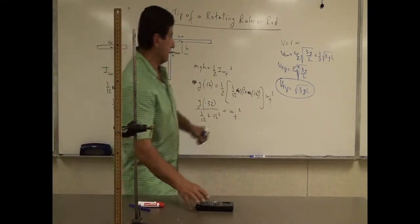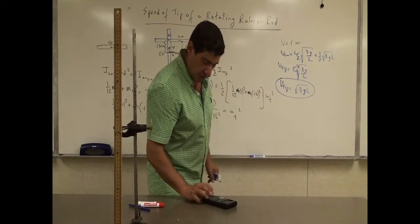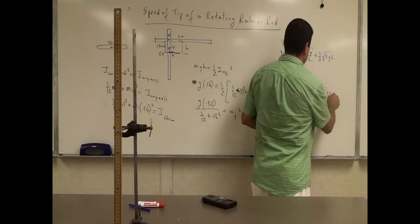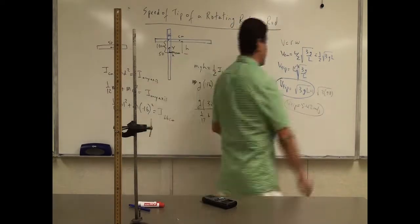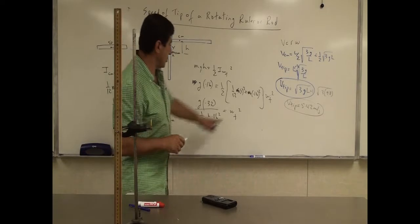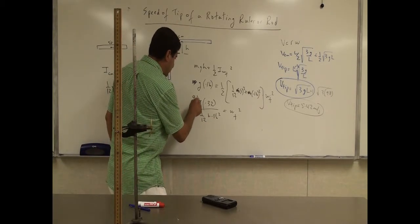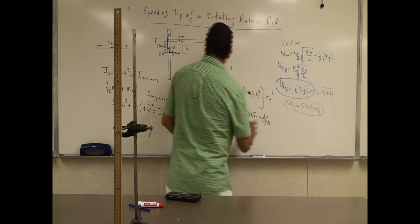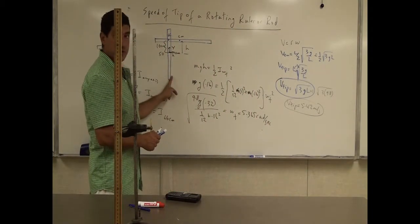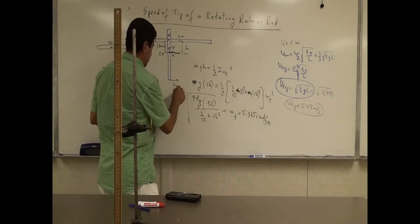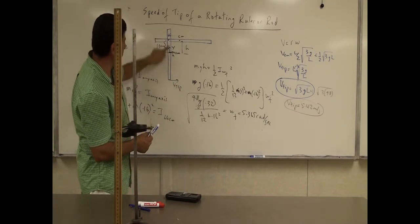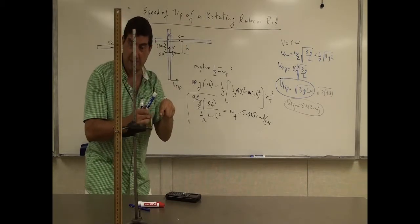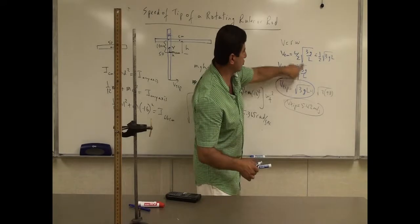For the end-pivot case with L = 1 meter, V_tip = square root of 3 × 9.8 ≈ 5.42 m/s. For the 66 cm pivot, the distance from the pivot to the tip is 66 centimeters (0.66 m) — since the tip is at the 0 cm mark and the pivot is at the 66 cm mark. So V_tip = 0.66 × omega_final.